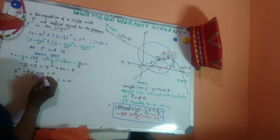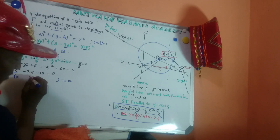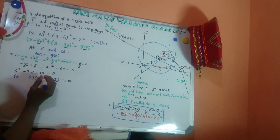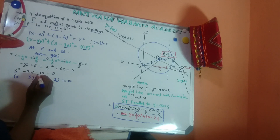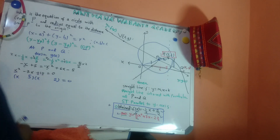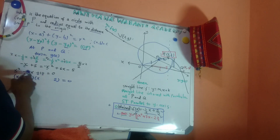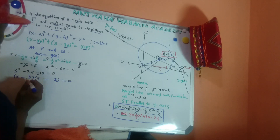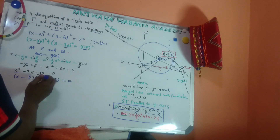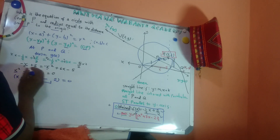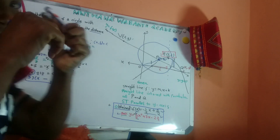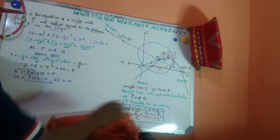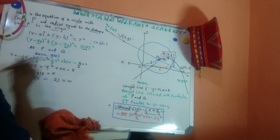We can factor this. x squared means we have x times x. To get 10, we need 5 and 2. If both are positive, we'd get positive 7, but we need negative 7. So both must be negative: negative 5 times negative 2 equals positive 10, and adding them gives negative 7. So the factored form is (x minus 5)(x minus 2) equals zero.